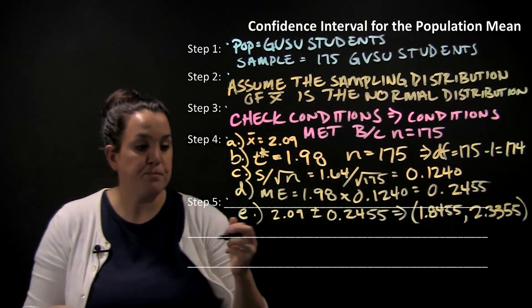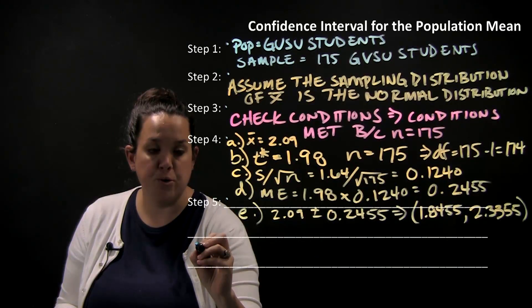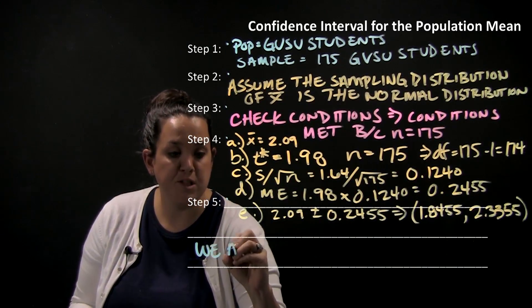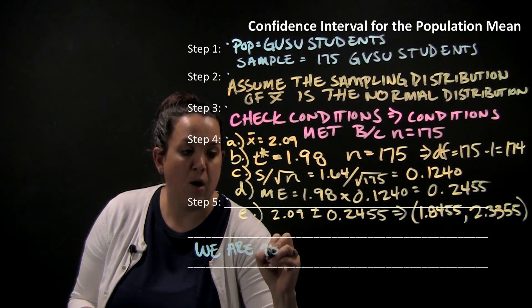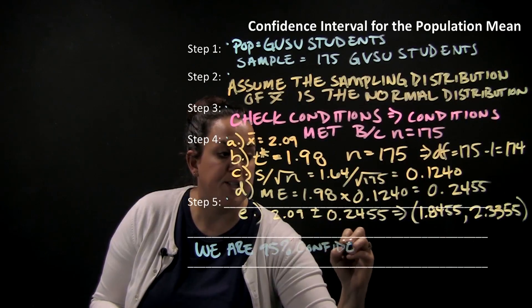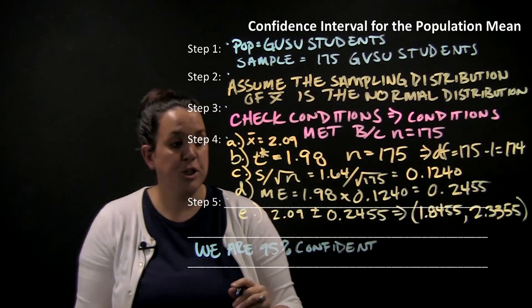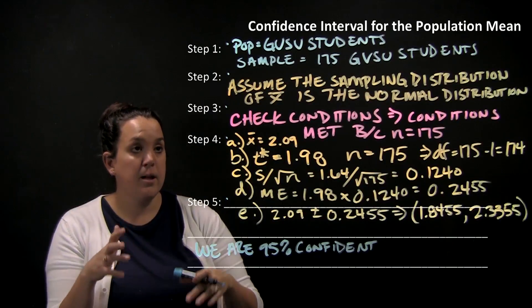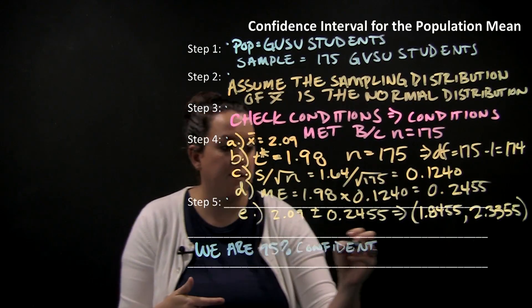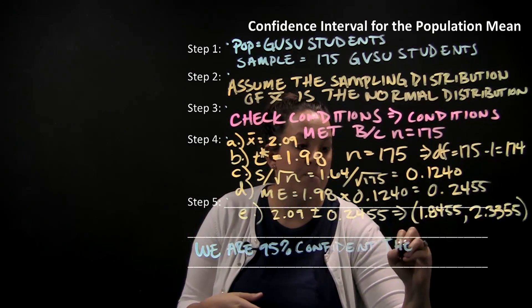As it says in the notes, we want to do a 95% confidence interval. So we'll say we are - that's how confident we are - so we're 95% confident. Then we're going to state our parameter definition. Here we have calculated information for mu, so that means we're going to state the mean. So we're 95% confident the mean.